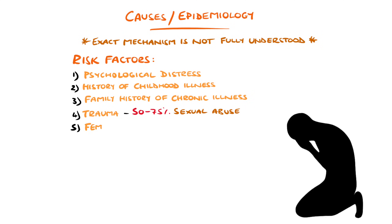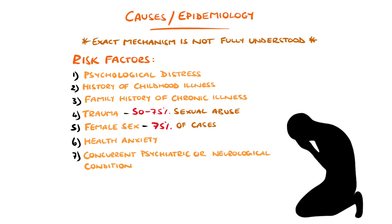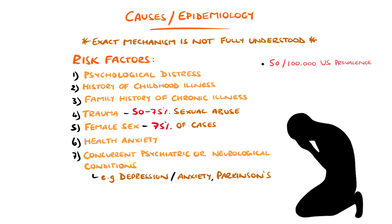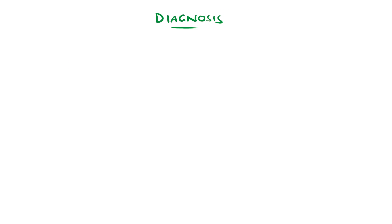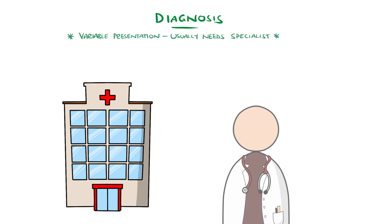Other risk factors include being female, as 75% of cases occur in females, health anxiety, and concurrent psychiatric or neurological conditions like depression, anxiety, or Parkinson's disease. Overall, it's a relatively common condition, with a prevalence of 50 per 100,000 of the US population. Its onset can be at any age, though it is most common in early to middle adulthood. FND can vary in its presentation, ranging from acute presentations to emergency services to routine primary care appointments, but usually requires a specialist opinion.